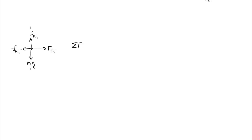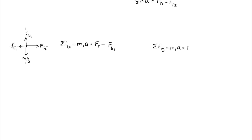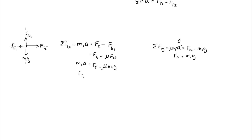Focusing on mass 1, summing forces in the x direction: mass 1 times acceleration equals force of tension 1 minus force of kinetic friction 1, which acts opposite to tension. Summing forces in the y direction: since the object has no vertical acceleration, force normal equals mass 1 times gravity. Substituting back into the x equation and expanding kinetic friction as mu times force normal, which equals mu times mass 1 times gravity, we isolate: force of tension 1 equals mass 1 times acceleration plus mu times mass 1 times gravity.